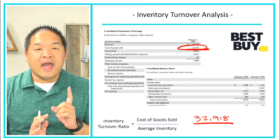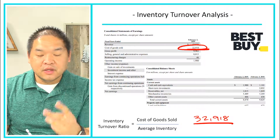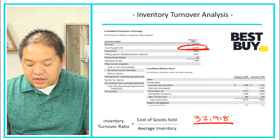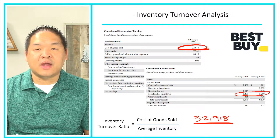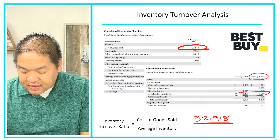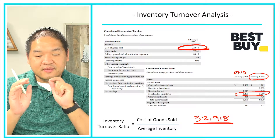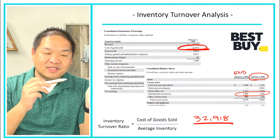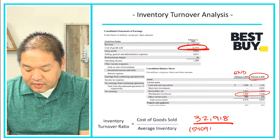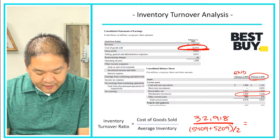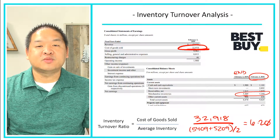Now it's time to find the average inventory — and this is where students get mixed up. Average inventory means you need to find the beginning inventory and the ending inventory, add them together, and divide by two. Looking at their balance sheet, Best Buy had inventory of $5,409,000,000 at the end and $5,209,000,000 at the beginning — because last year's ending is this year's beginning. So 5,409 plus 5,209 divided by two gives us an average inventory, and Best Buy's inventory turnover ratio comes out to 6.20.